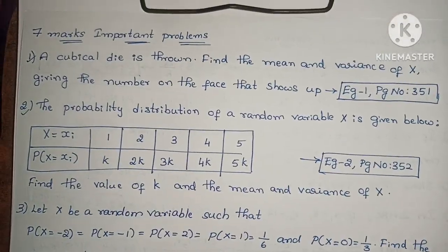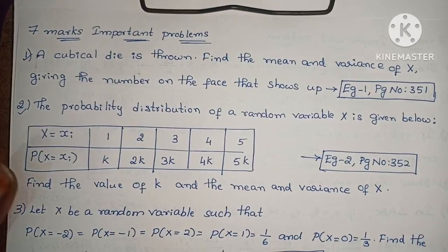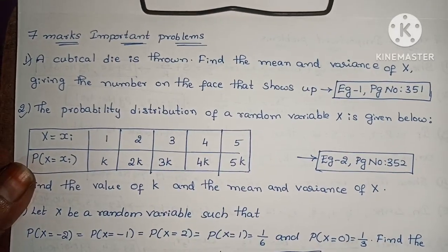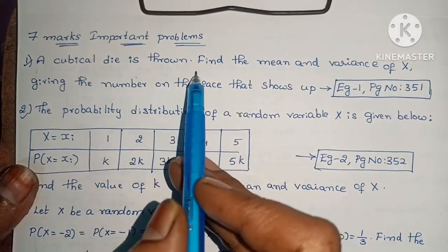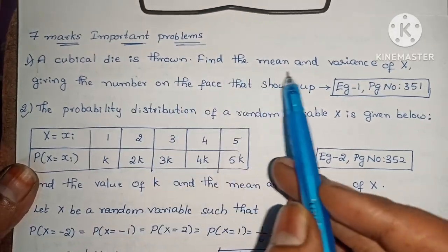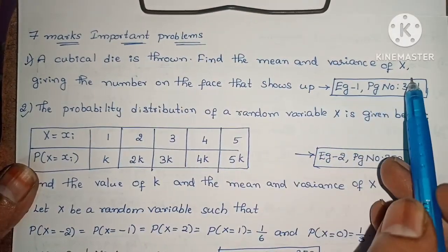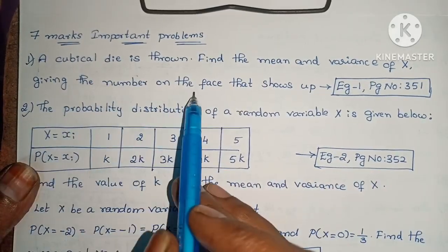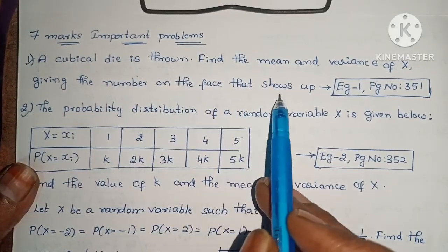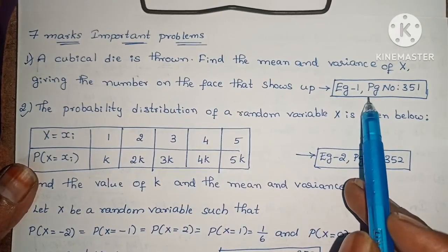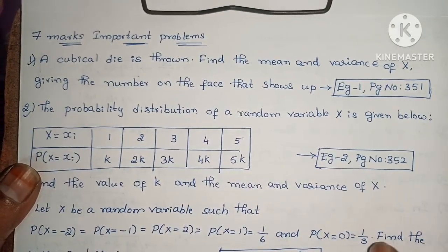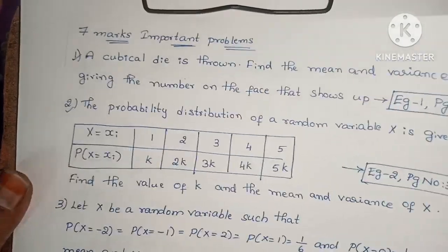Next, some five-mark important problems. First one: a cubical die is thrown. Find the mean and variance of x, giving the number on the face that shows up. Example 1, page number 351.